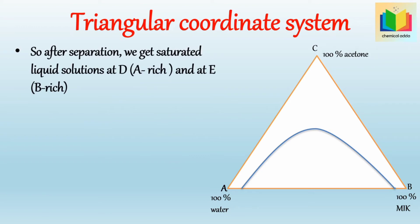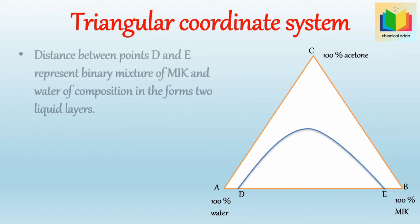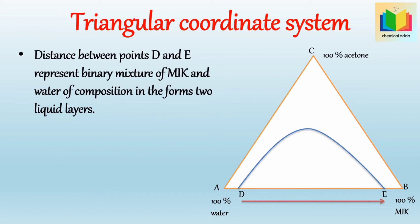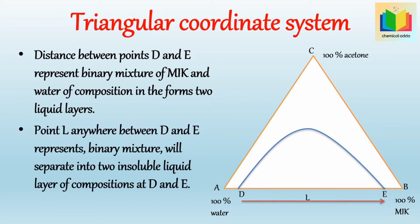After separation, we get saturated liquid solution layers or phases. At point D, an A-rich phase (which contains more component A) is obtained, and at point A, a B-rich phase (which contains more component B) is obtained. The distances AD and BA represent the solubility of solvent B in A and the solubility of A in B. The distance between points D and A represents a binary mixture of MIK and water of composition in the form of two liquid layers. Any point L between D and A represents a binary mixture that will separate into two insoluble liquid layers of compositions shown by point D and point A.